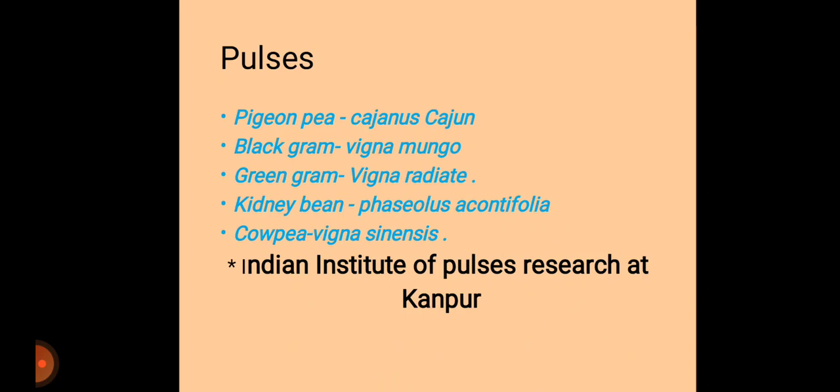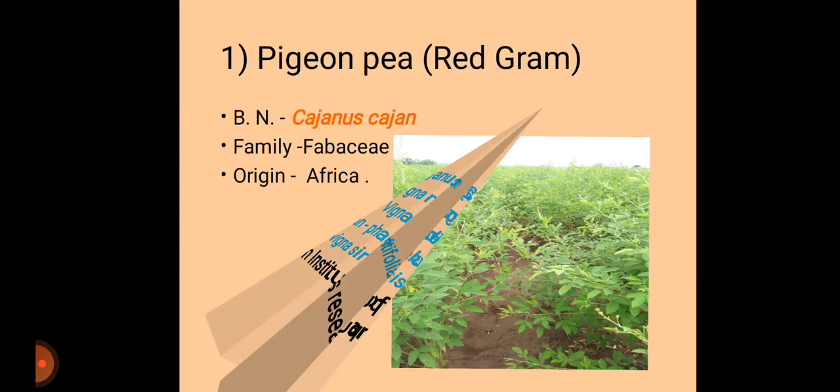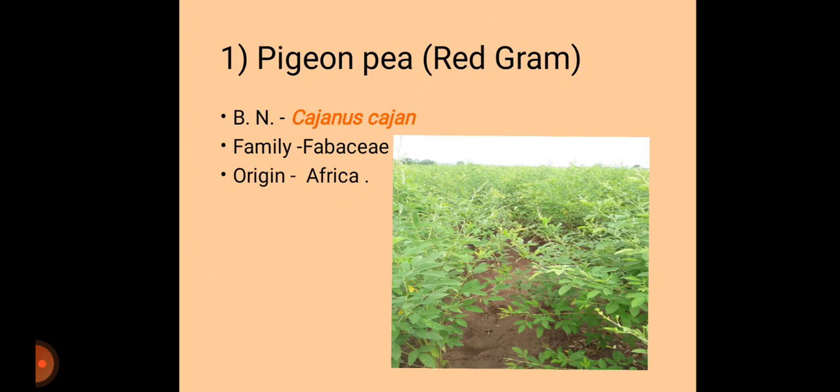The Indian Institute of Pulses Research is located at Kanpur, Uttar Pradesh, where research on all pulse crops is conducted. Today we discuss the second most important pulse crop after chickpea — pigeon pea, also called red gram or tur, botanically known as Cajanus cajan, belonging to family Fabaceae or Leguminaceae.